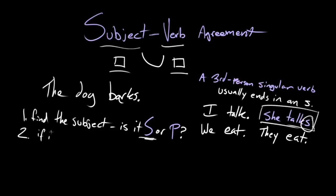So if the subject isn't a noun but a pronoun, same question: is it singular or plural? I is singular, there's only one me. We is plural, there's many of us. And if it's singular third person, so like she, he, it, end it in an S.